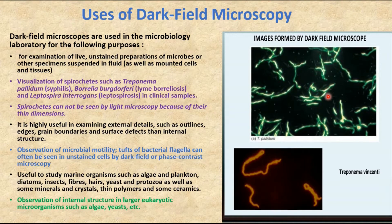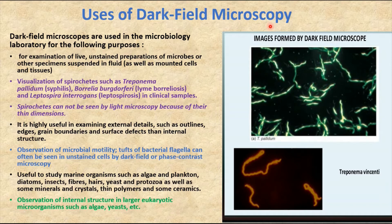The dark field microscope has a vast advantage compared to the bright field microscope. For example, we can study live unstained preparations of microbes or other specimens suspended in fluid very easily. In the bright field, we cannot observe live organisms very clearly when compared to the dark field.